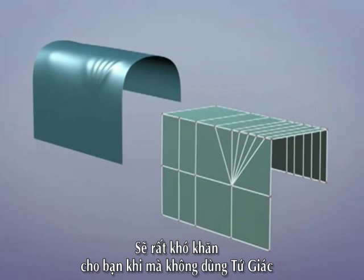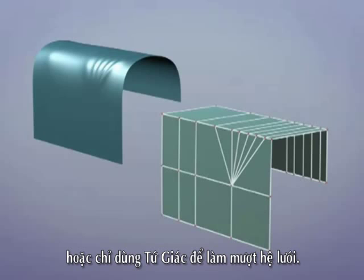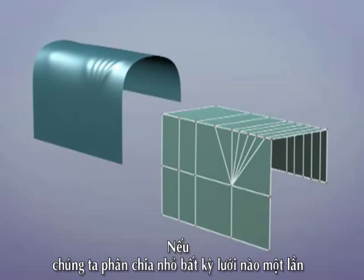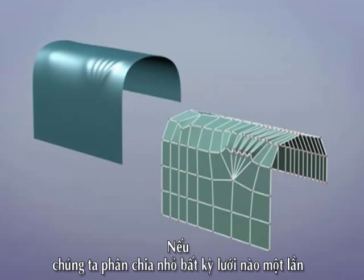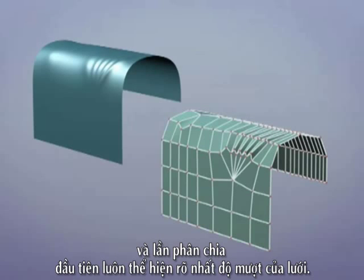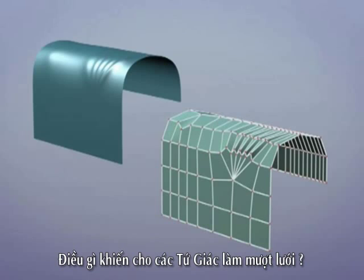It's also worth noting that non-quads are not the only cause of smoothing artifacts. Indeed, if we subdivide any mesh once, it will become all quads, and yet further subdivisions will still obviously show smoothing artifacts. What are the other causes of smoothing artifacts?